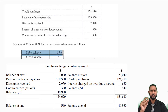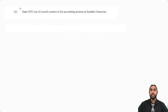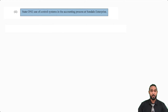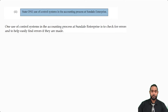There's just one little theory piece. It asks: state one use of control systems in the accounting process of Sundale Enterprises. Control systems refer to things such as control accounts, your trial balance, your bank reconciliation statement, and your suspense account. The primary purpose of control systems in the accounting process is to check for errors and to help easily find errors if they are made.